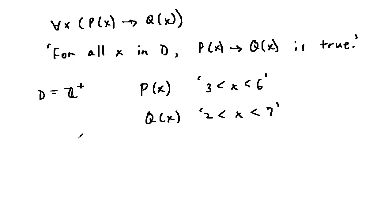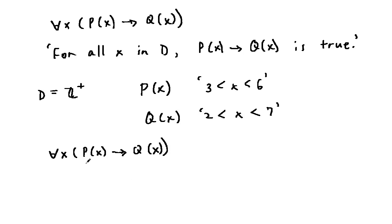Then, for all x, P(x) entails Q(x). This is saying that every positive integer between 3 and 6 is between 2 and 7. And if this is so, then this statement is true.